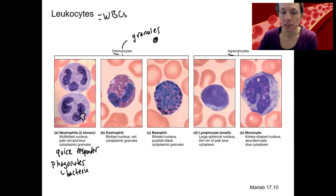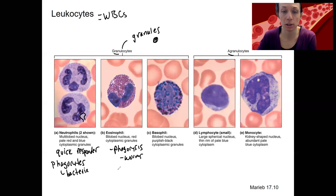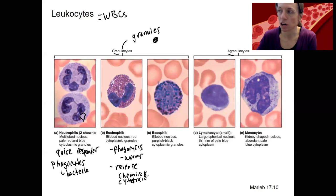Eosinophils, staining with the eosin dye, have various functions. Some of their functions include phagocytosis as well. They are kind of specialized for parasitic infections, like parasitic worms, and they also release cytotoxic chemicals, as a lot of white blood cells do. Cytotoxic means things that are toxic to other cells.